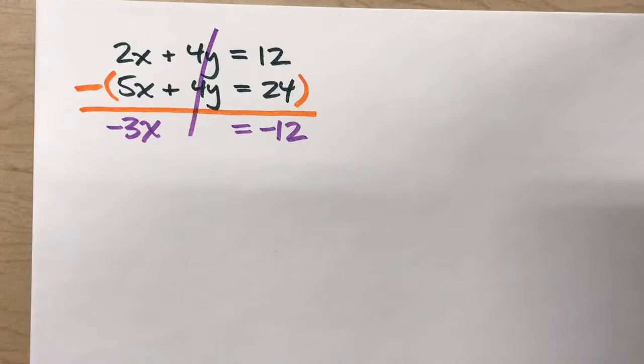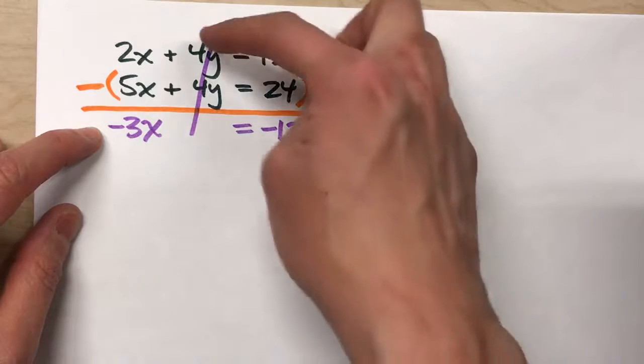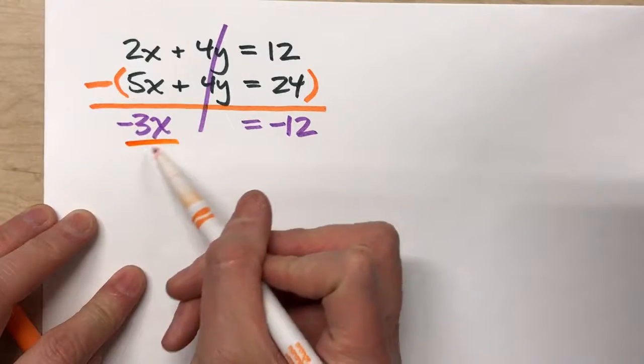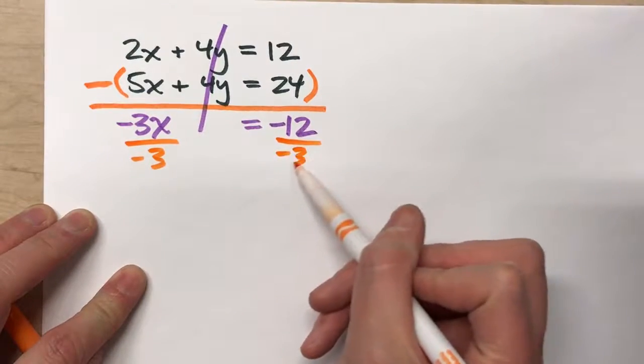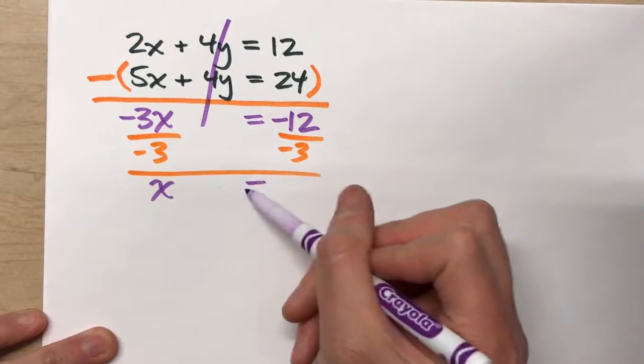So in this case, by subtracting the two equations, we end up with an equation that's simpler and no longer has the y's because they've been eliminated. Now we can just solve for x. Divide both sides by negative three. x equals positive four.